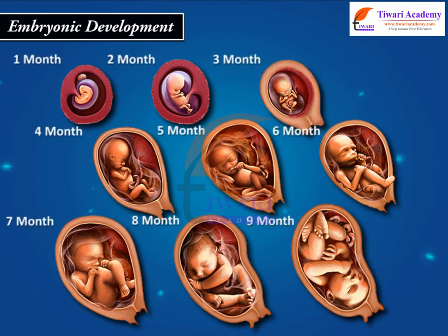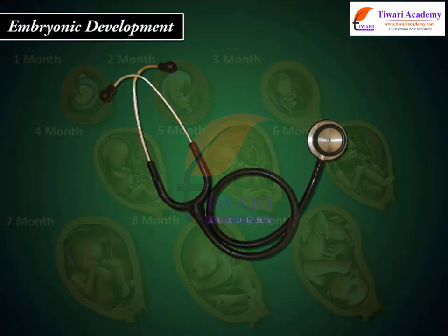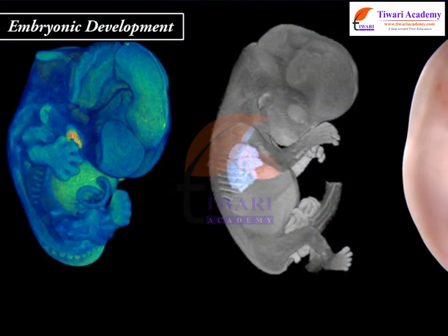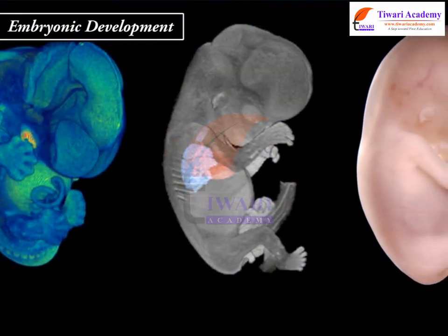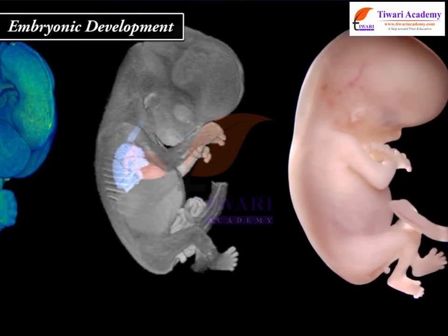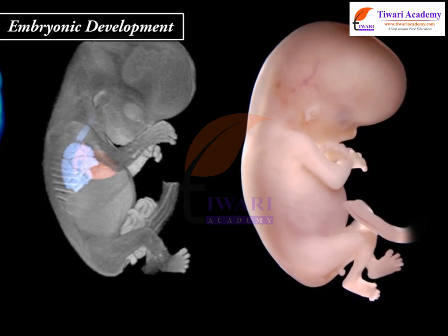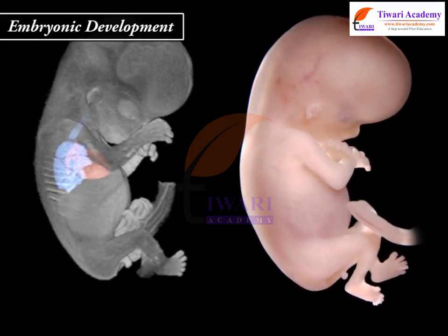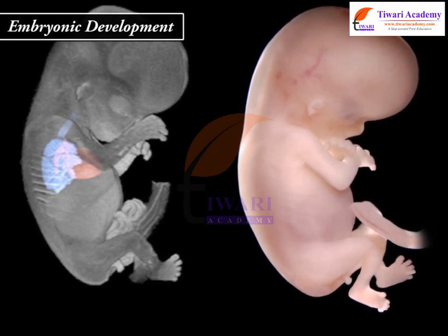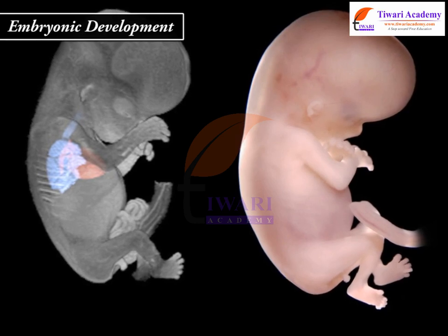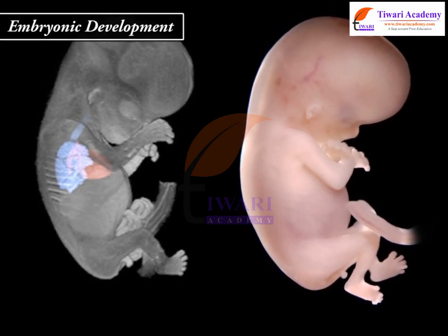The first sign of a growing fetus may be noticed by listening to the heart sound carefully through a stethoscope. By the end of the second month of pregnancy, the fetus develops limbs and digits. By the end of the first trimester, most of the major organ systems are formed; for example, the limbs and the external genital organs are well developed.